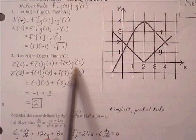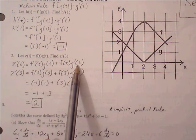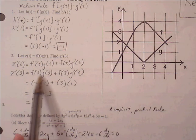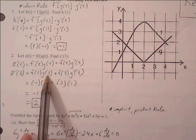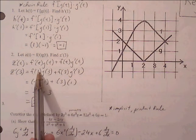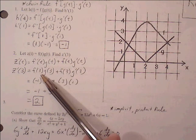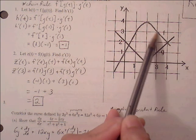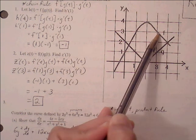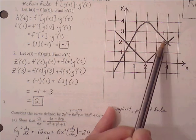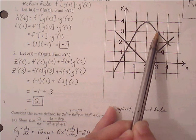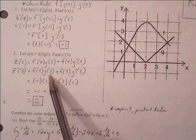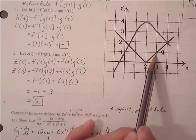We first evaluate the derivative correctly with the appropriate formula, and then we can evaluate z prime of three by replacing every t value with three: f prime of three times g of three, plus f of three times g prime of three. F prime of three is the slope of the f graph at three — we see this line segment here, down one over one, so our best approximation is negative one. G of three is simply the y value of g when x equals three, which is one.